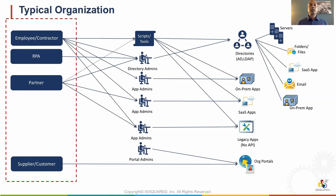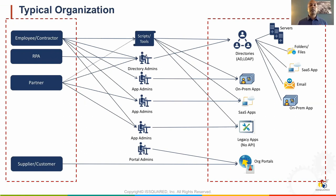The other type of internal user entity gaining popularity is the RPA — Robotic Process Automation. These entities need access to perform their job duties and have a similar identity life cycle as a human. Then you have the business partners — external entities who need access to internal systems or applications. Lastly, you have the suppliers and customers who would be accessing the various portals hosted by the organization. On the right you see applications and systems the users will be accessing. Many of the applications and systems will be connected to one or more directories. There are also those legacy applications.